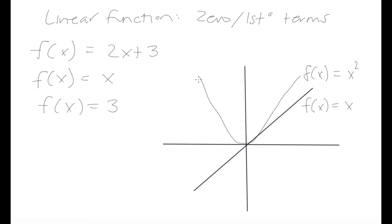In the nonlinear function we have a negative slope at first, then as we reach the bottom the slope looks like it's actually zero, and then we have a positive slope. So the slope in that graph is changing, whereas in our linear function we have a constant slope — and that's one of the factors that differentiates linear and nonlinear functions.